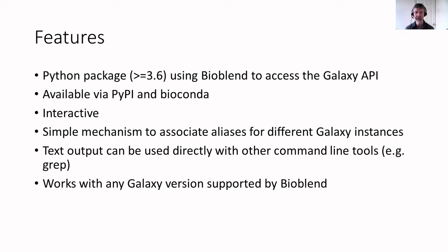Among its features, it's a Python package using Python 3.6 or greater, and it's built on top of BioBlend which it uses to access the Galaxy API. It's available from both the Python Package Index and also from BioConda. It's interactive and has a simple mechanism that allows you to associate aliases for different Galaxy instances, making it easy to work with multiple servers. Its text output can be used directly with other command line tools such as grep, and it works with any Galaxy version that is supported by BioBlend.